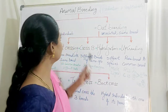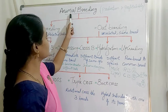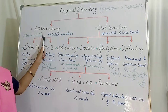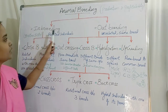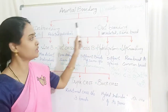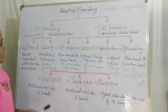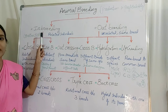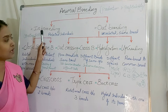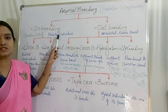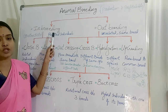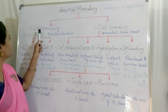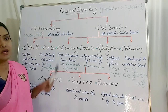In animal breeding it is mainly classified into two types: inbreeding and outbreeding. In case of inbreeding, it is the mating between animals which are closely related — the closely related individuals or animals will be mated.